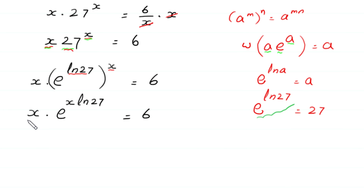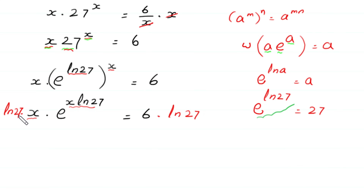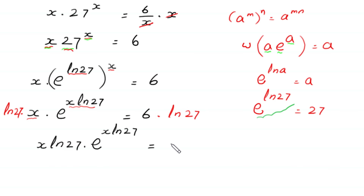Now to use the Lambert W function, we must have the same expression in both positions. Here we have x times ln of 27 in the exponent, but here we have only x. So to make them match, we multiply both sides by ln of 27. This gives ln of 27 times x times e to the power (x times ln of 27) is equal to 6 times ln of 27.